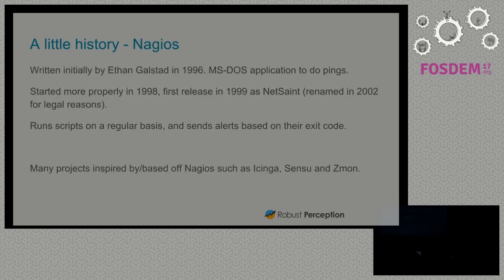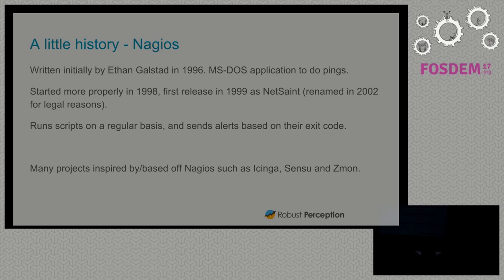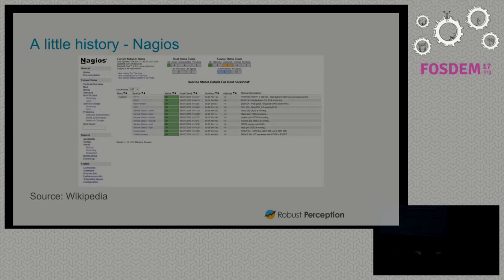Nagios is the other kind of tool we have. It started by Ethan Galstad in 1996, actually as an MS-DOS program to do pings. The actual project itself started in 98. It became NetSaint and was renamed for legal reasons in 2002 to Nagios, a name which we all know and love. Basically it runs a script; it looks at the exit code — if it's non-zero, you're getting woken up. There are lots of things still following the Nagios model: Icinga, Sensu, Zabbix. Still following the same basic idea: I run a script, I get an alert if it fails. We see the stuff we're basing off is 94, 96 — 20-year-old ideas, systems from a different era.